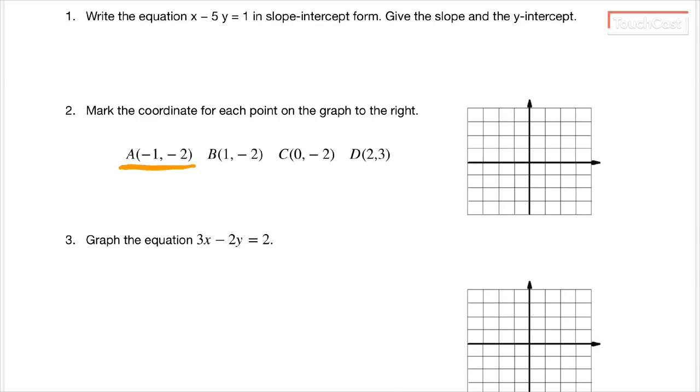Let me make sure we have a good pen here. So point A is negative one, negative two. Now, the first term is the x-coordinate, and the second is the y-coordinate.